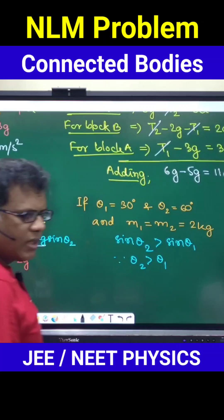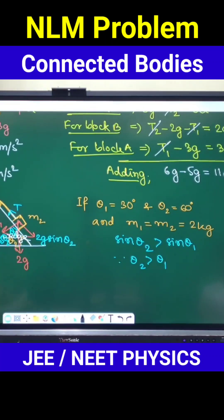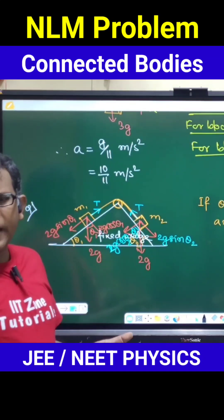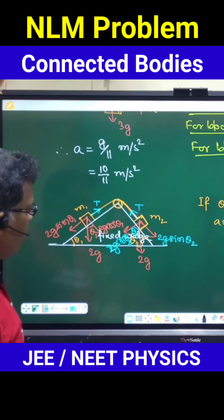Don't we know this truth that sin is an increasing function for an angle 0 to 90 - the more you will take angle, the more you will get the value of sin. So since theta 2 is greater than theta 1, we can comment that sin theta 2 will be more than sin theta 1.